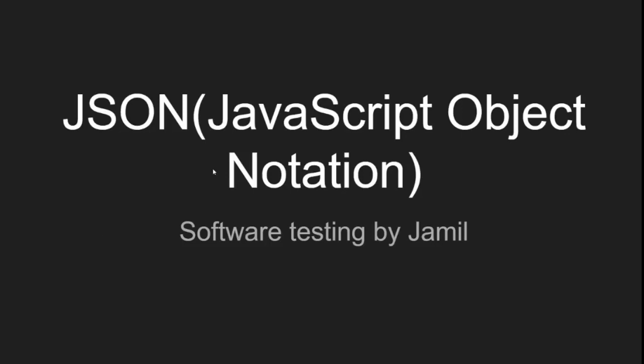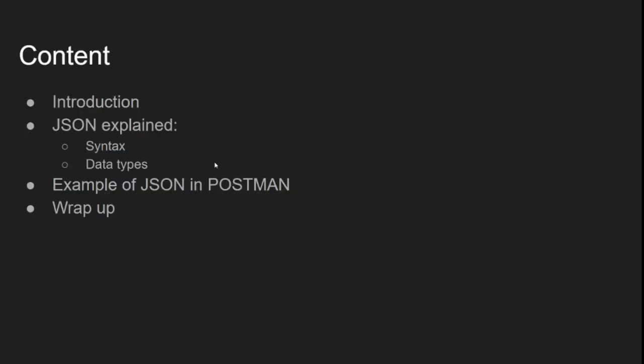Hello everyone and welcome back to Software Testing by Jamil. Today's topic is JSON — JavaScript Object Notation — which I personally use as part of API testing. The agenda covers an introduction to JSON, JSON syntax and data types, an example in Postman, and actual JSON writing used for testing account imports and transactions.